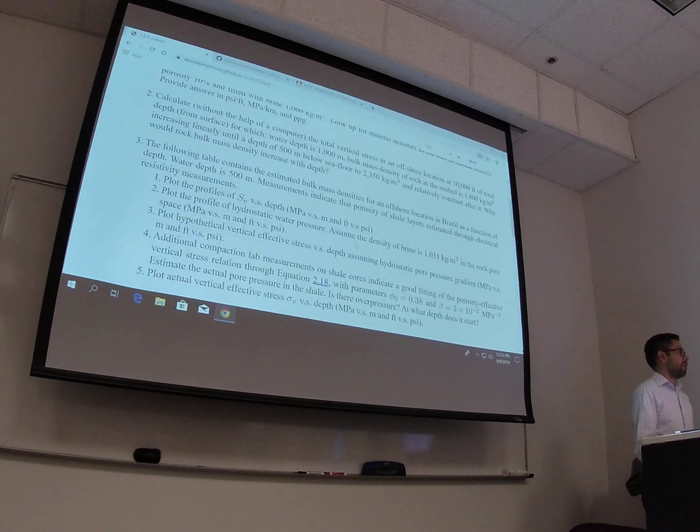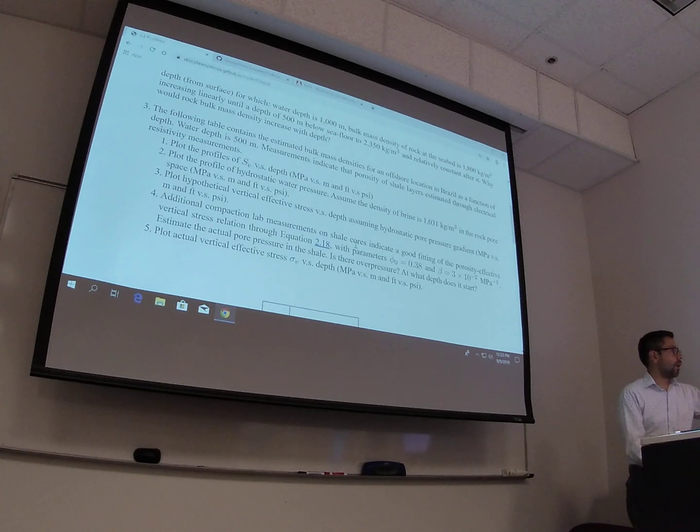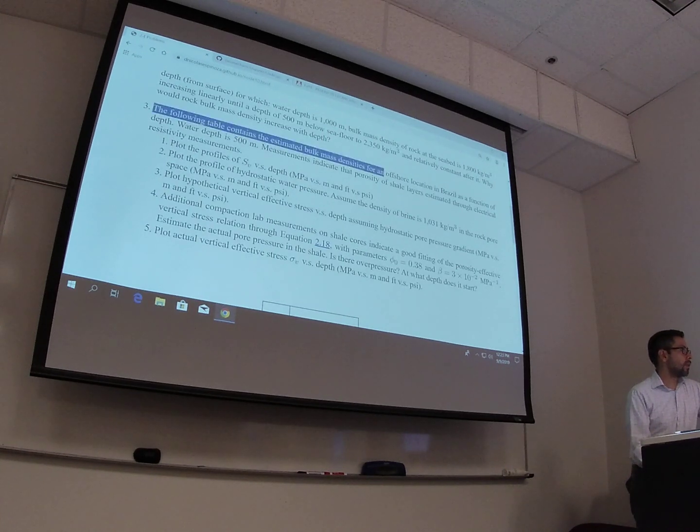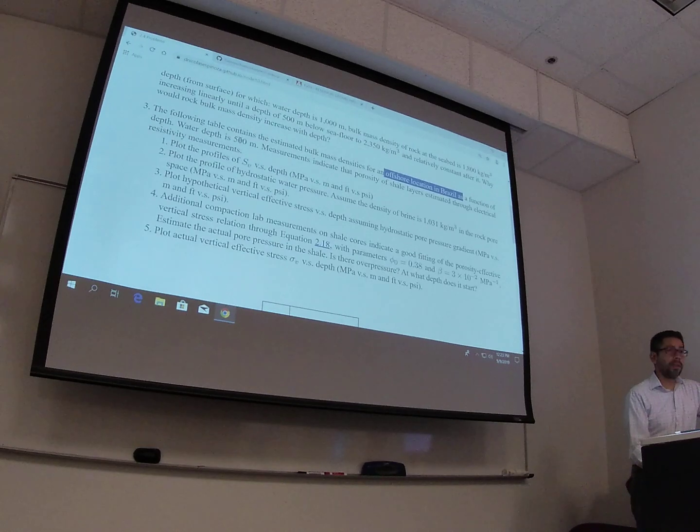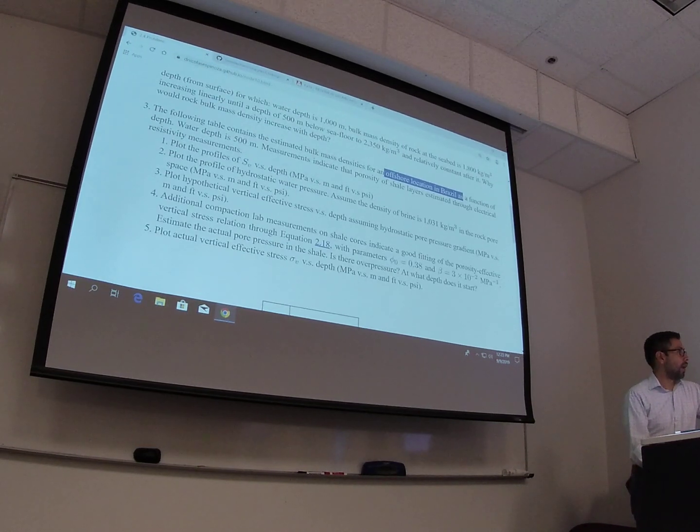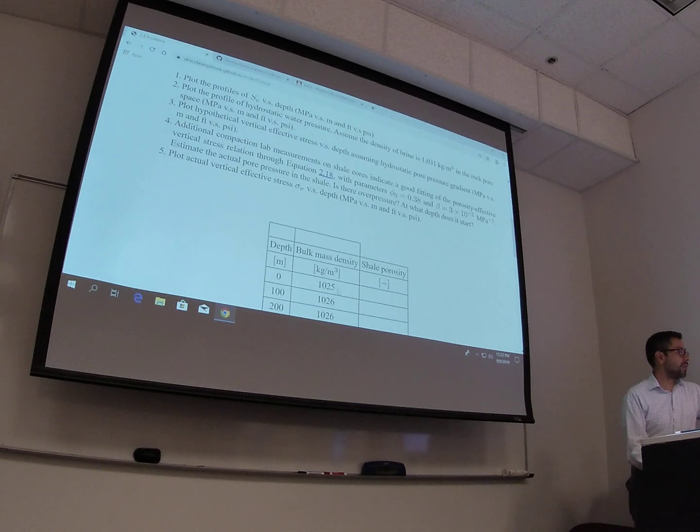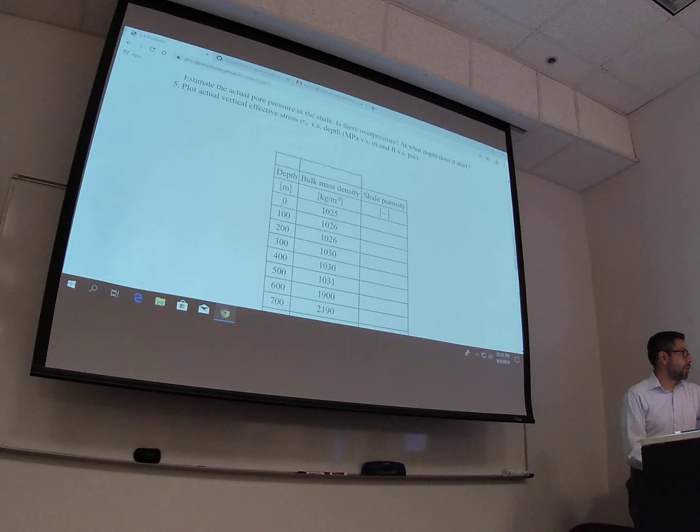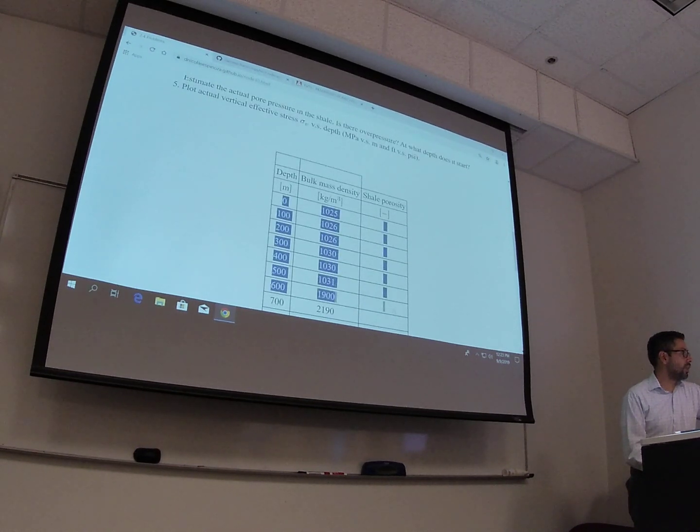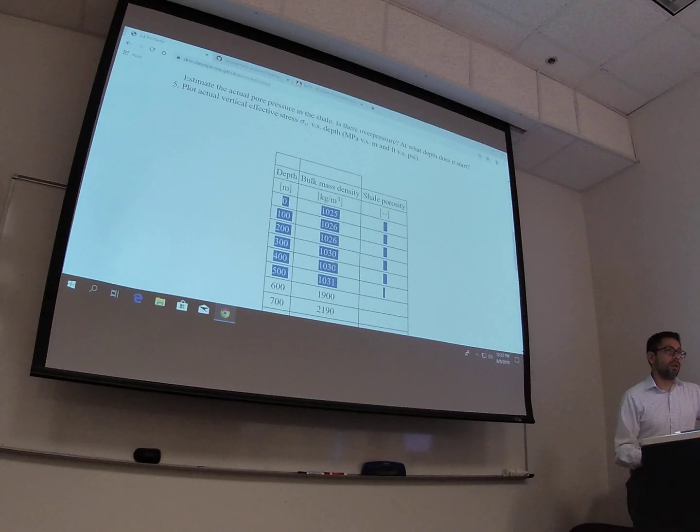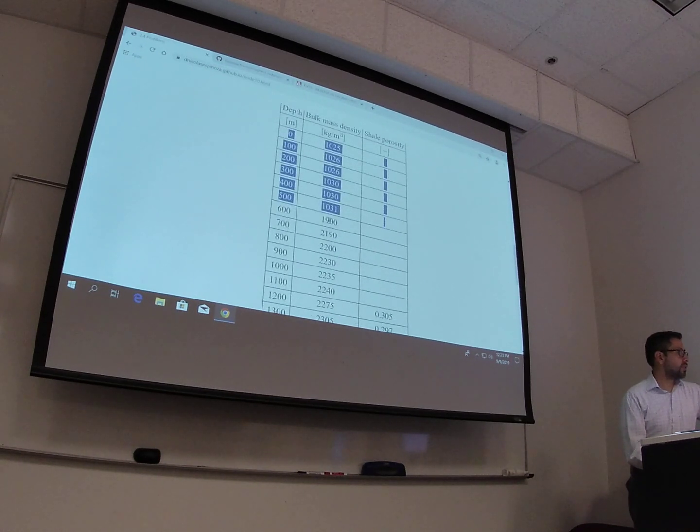Okay, so this is problem number 3. It's a problem offshore, and you know what is the water depth. And for this case, first of all, I'm asking you to calculate the total vertical stress with a density which is variable. So in the section from 0 to 500 meters is just water, or it's actually salty water. That's why the density is a little bit higher.